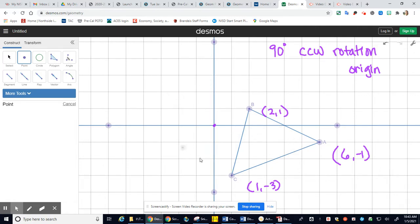We do a couple of things with your points. Number one, we switch your X and your Y, and then you make your X value the opposite.